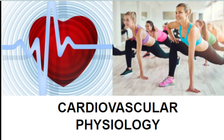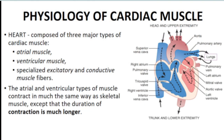Hi guys, welcome back to my channel. For today's video we are going to be talking about cardiovascular physiology. Before you watch this video, hopefully you were already able to finish the cardiovascular anatomy video. The heart is composed of cardiac muscle — we have pectinate muscles in the atrium, trabeculae carnea in the ventricles, and a third type: specialized excitatory and conductive muscle fibers.